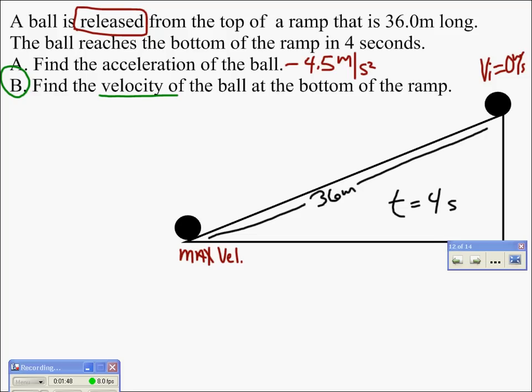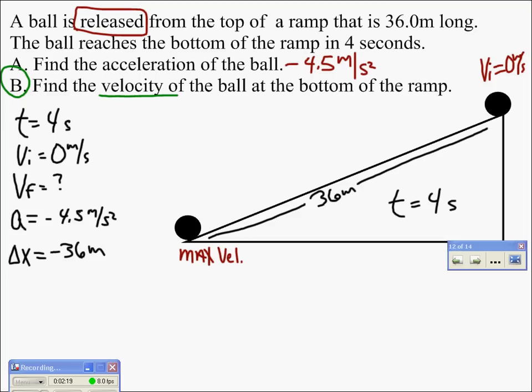So let's start our variables list. We know time is four seconds, we know our initial velocity to be zero meters per second, we're looking for our final velocity, we don't know what that is, and we know the acceleration now because we've solved it in that problem and we said it was negative 4.5 meters per second squared, and finally we know our displacement to be negative 36 meters.